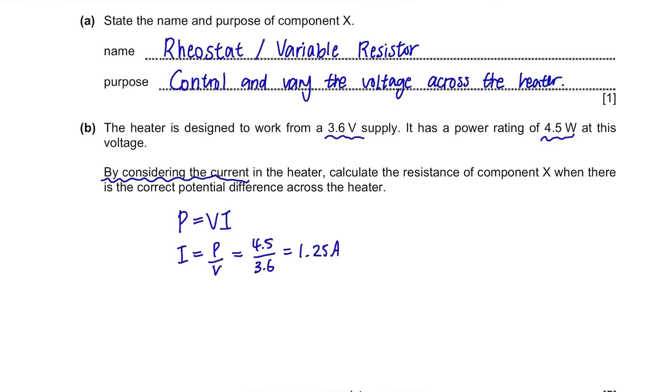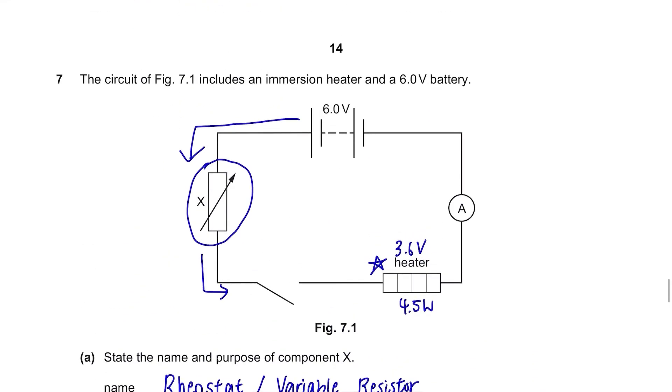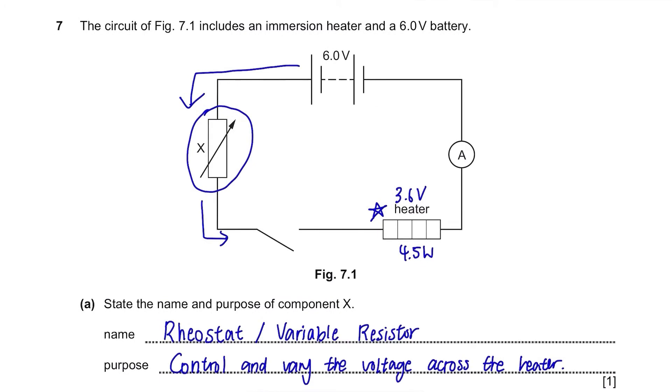Back to analyzing the question, calculate the resistance of component X. Take a look at this diagram. The voltage is 6V from the battery and the heater takes 3.6V. This A here is the ammeter which measures the current and it does not take in any voltage. So obviously, the remaining energy after taking out 3.6V from 6V will be at the rheostat.